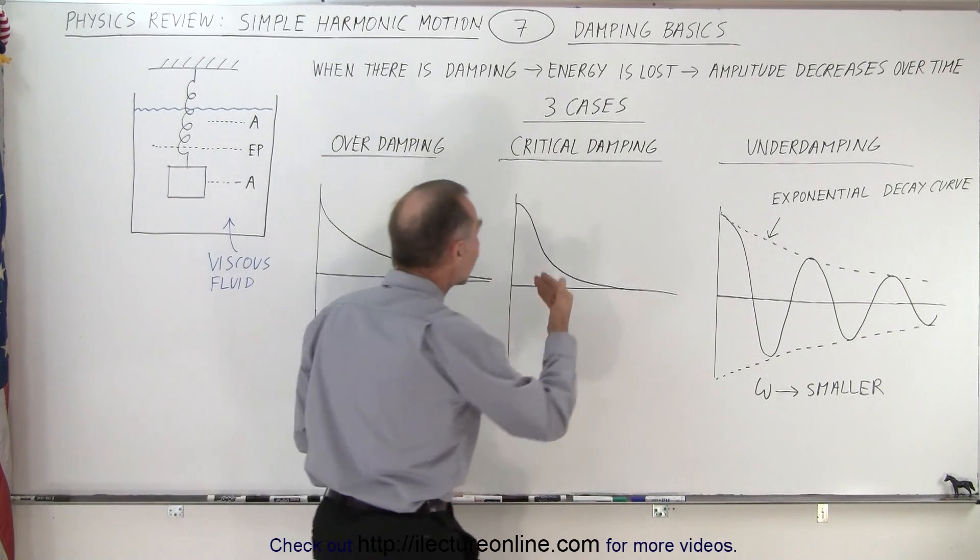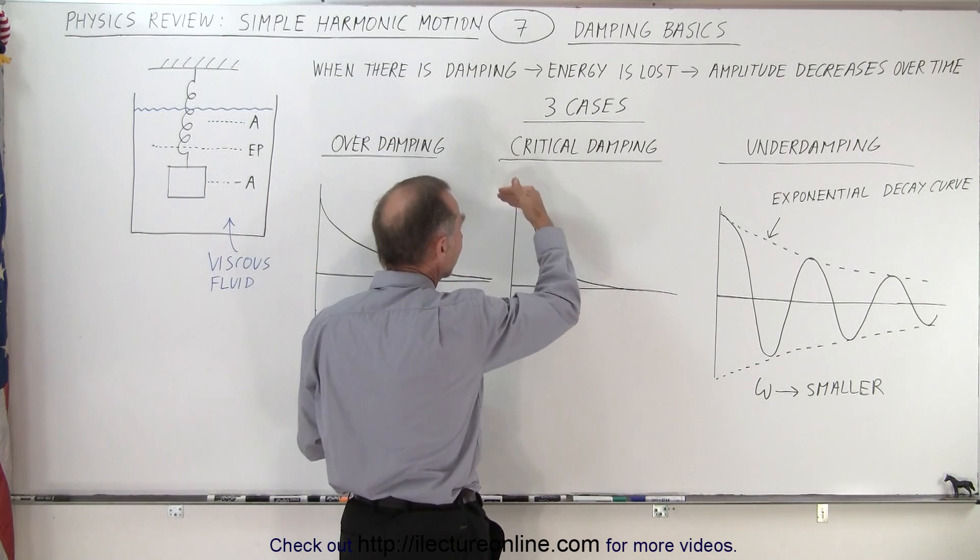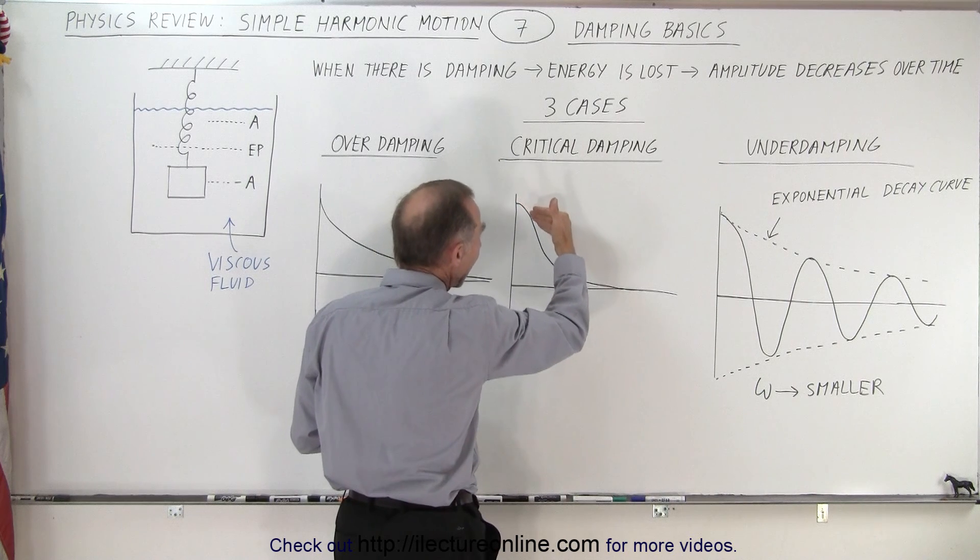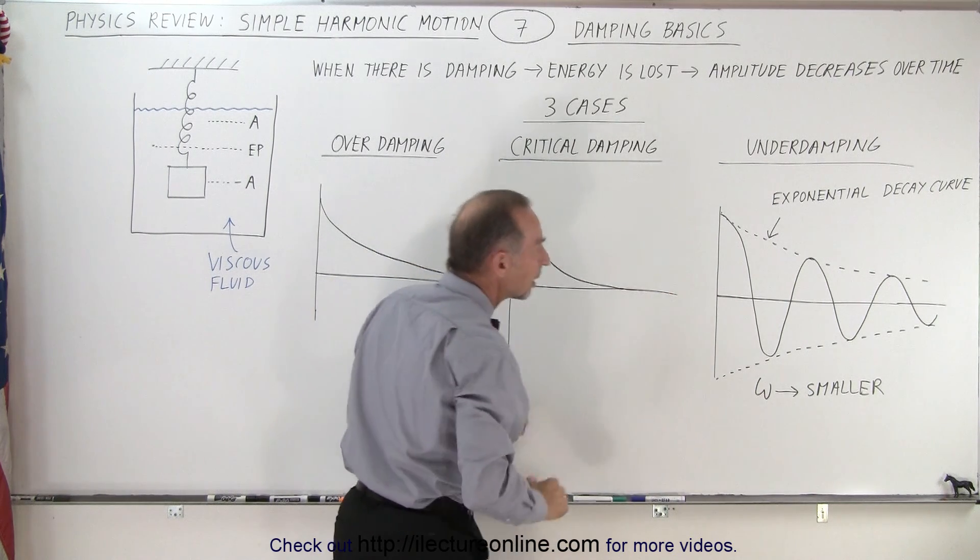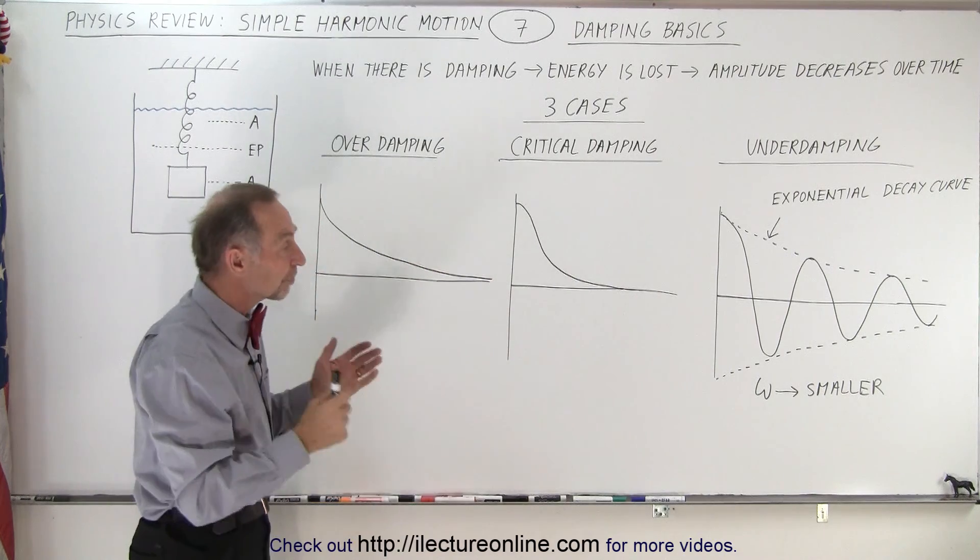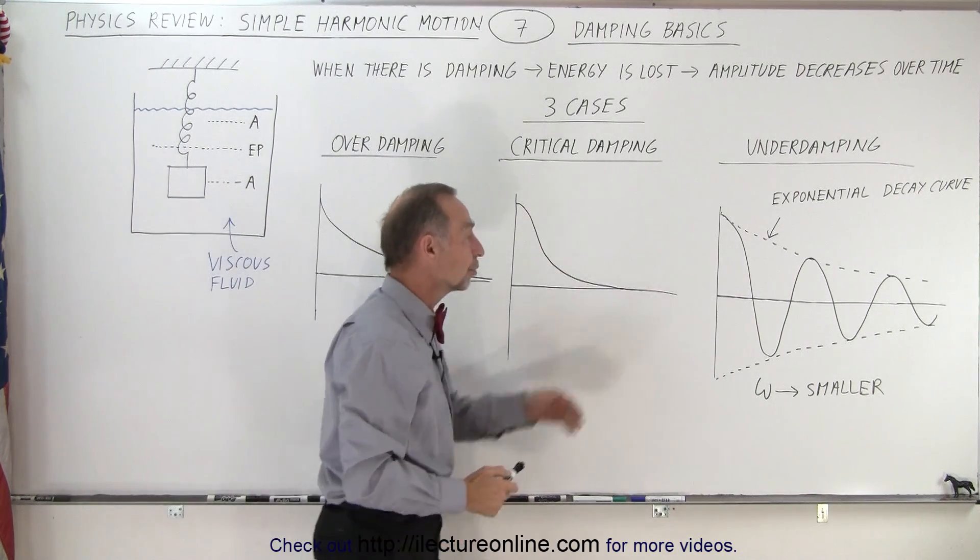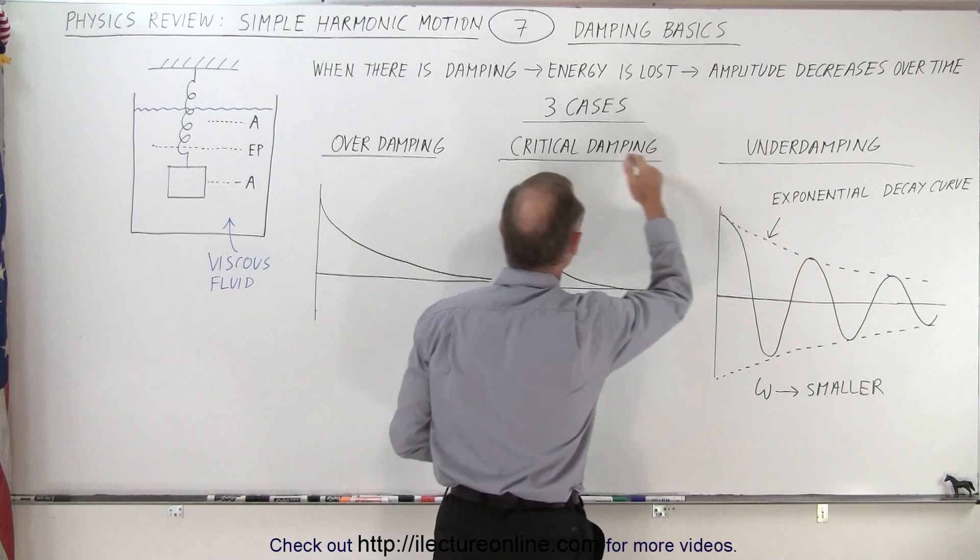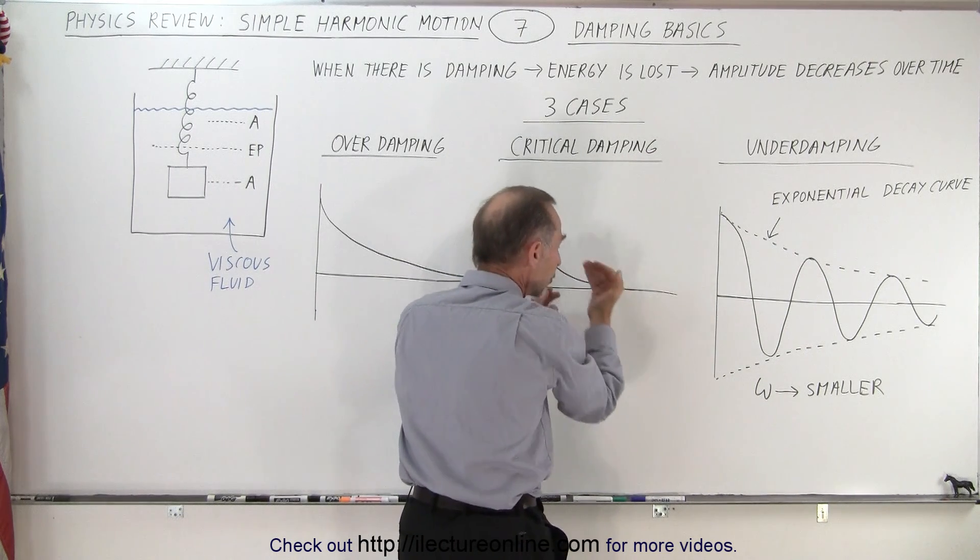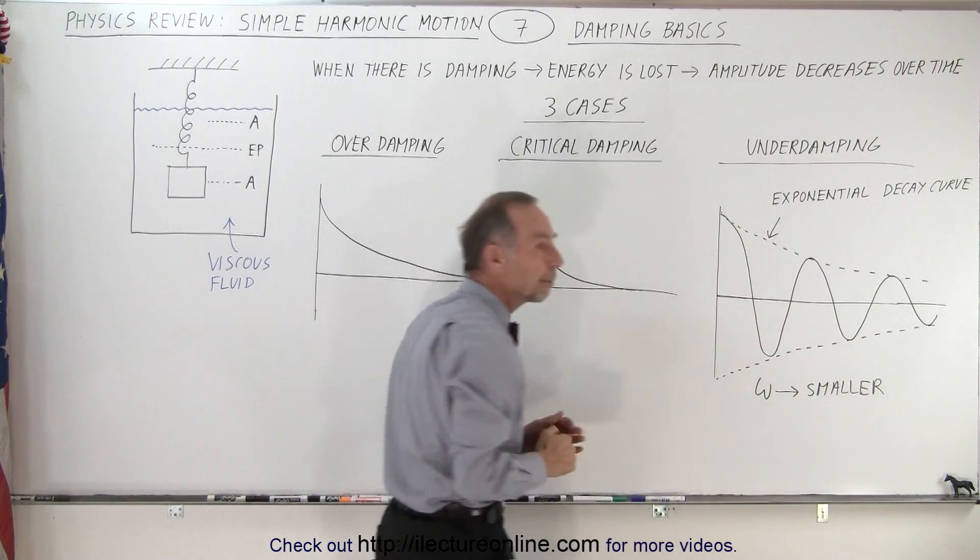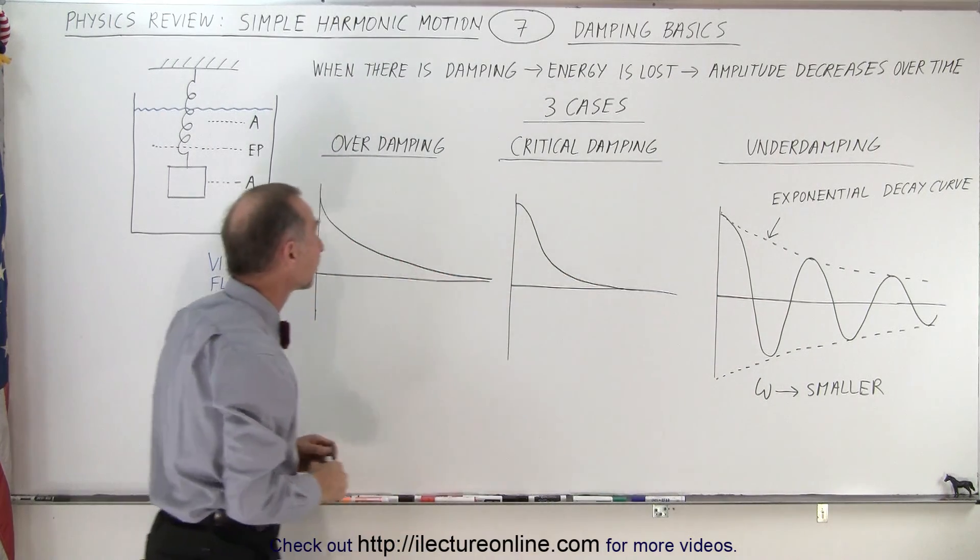Critical damping is where the object experiences damping and it comes down and smoothly reaches the equilibrium point over time and doesn't overshoot it. So the difference between underdamping and critical damping is that in critical damping the motion doesn't overshoot the equilibrium point, otherwise you have what we call underdamping.